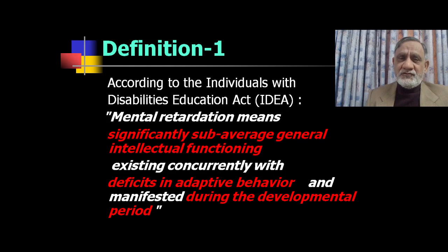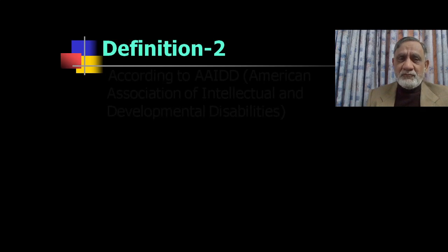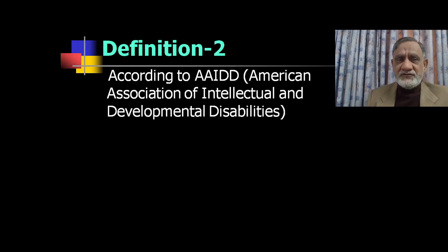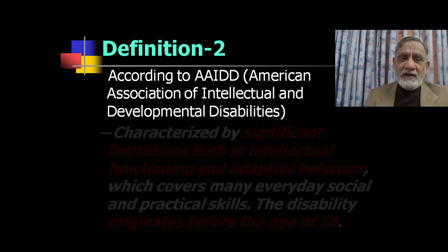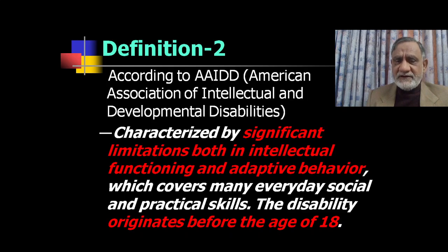The first is that the child is significantly sub-average in general intellectual functioning. The second is that there are deficits in adaptive behaviors. The third is that this occurs during the developmental period, before the age of 18 years. According to the American Association of Intellectual and Developmental Disabilities, intellectual disability is defined as significant limitation both in intellectual functioning and adaptive behavior, which covers many everyday social and practical skills, and that disability originates before the age of 18.